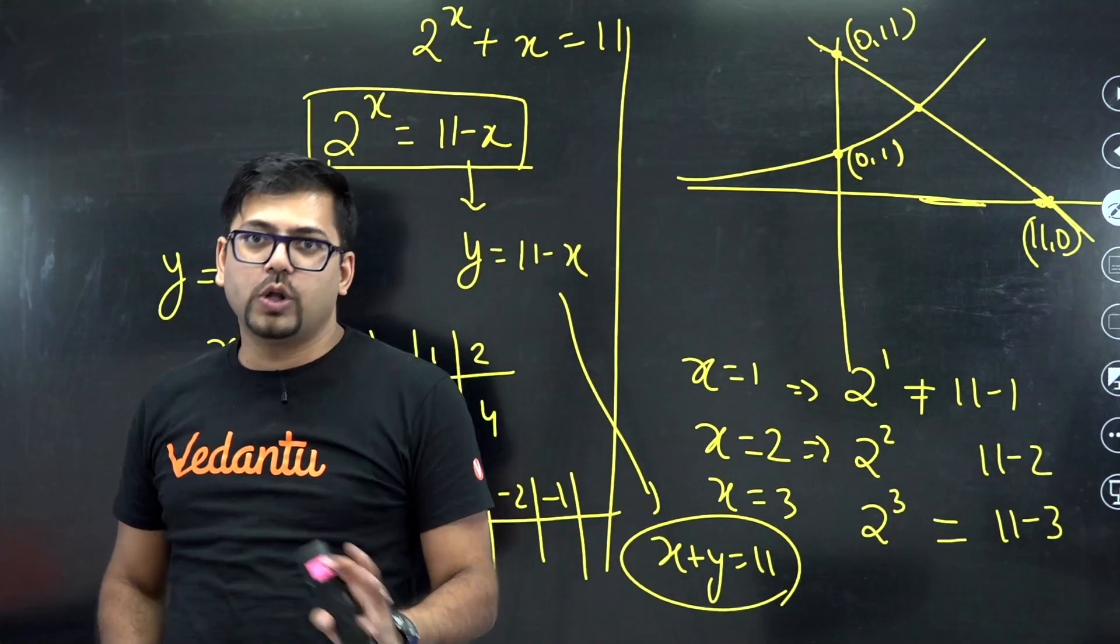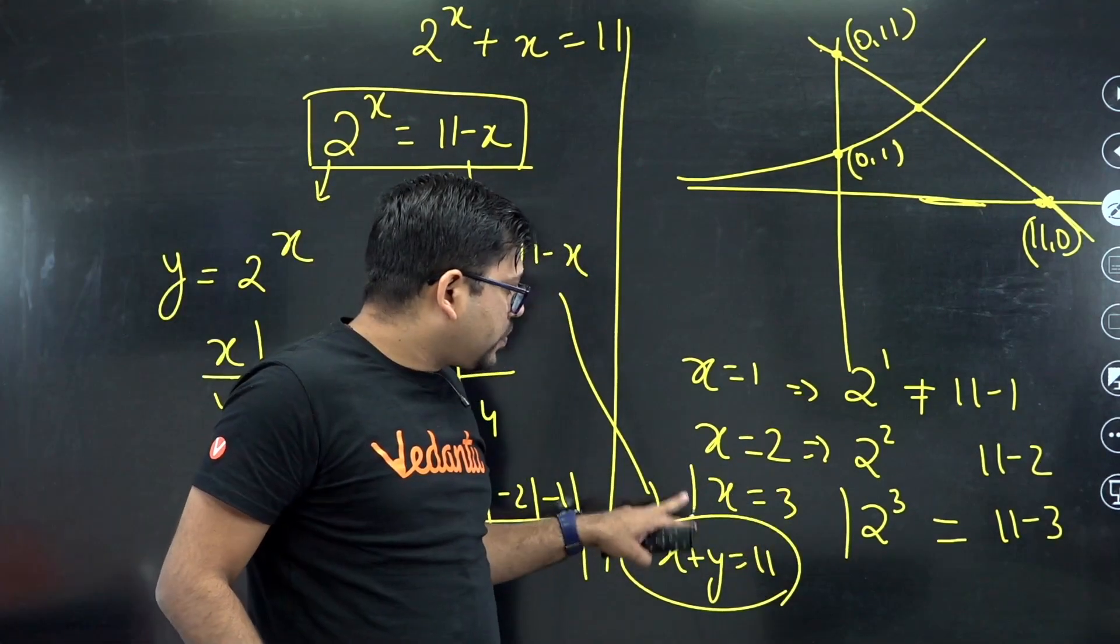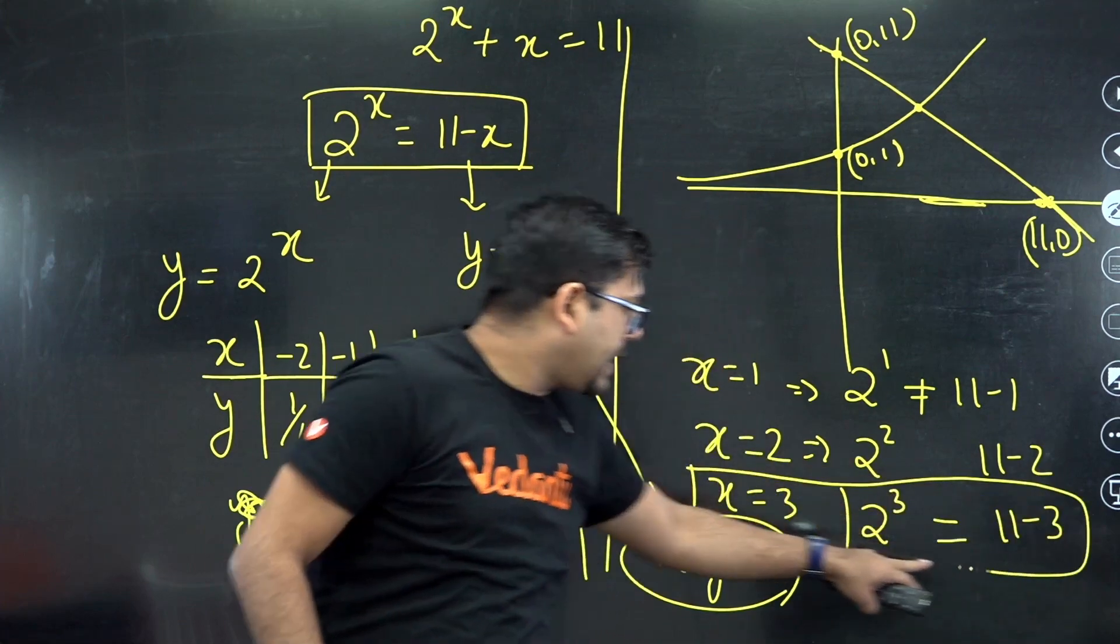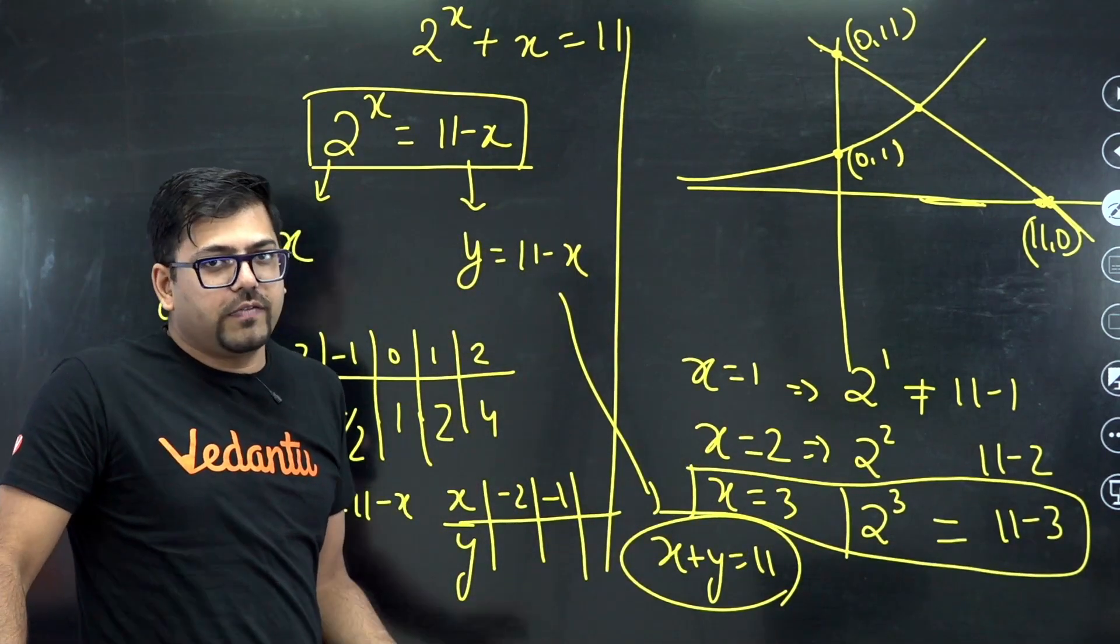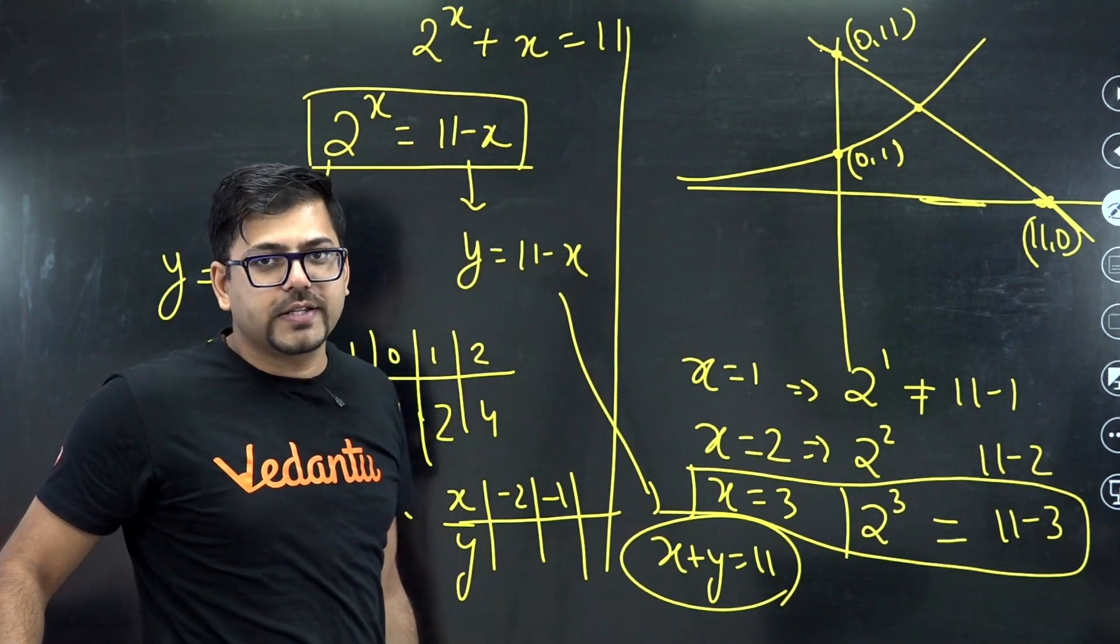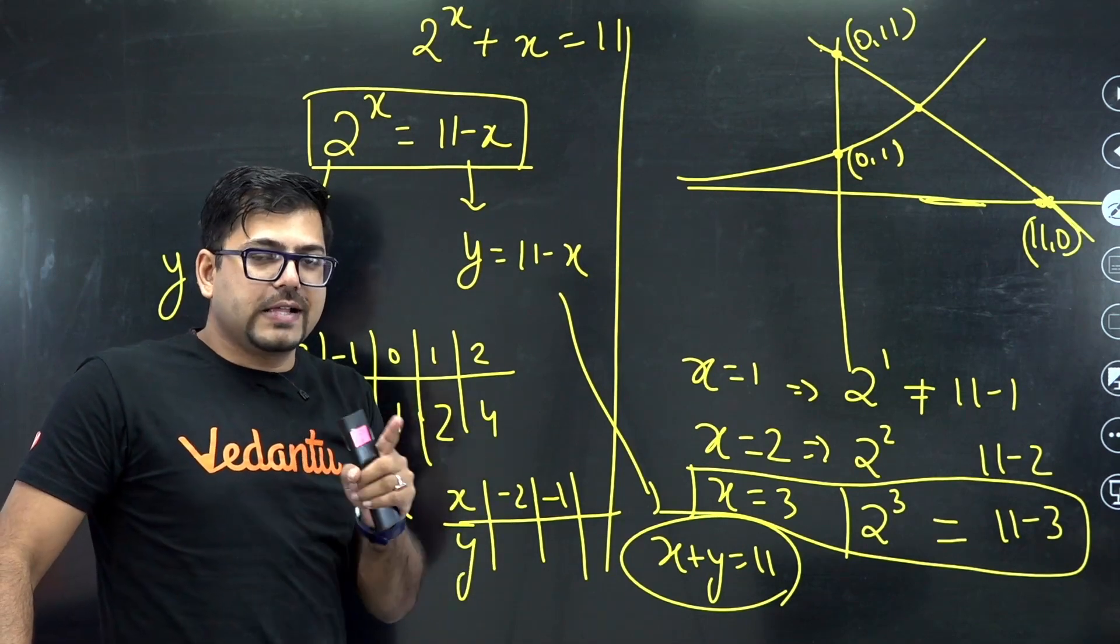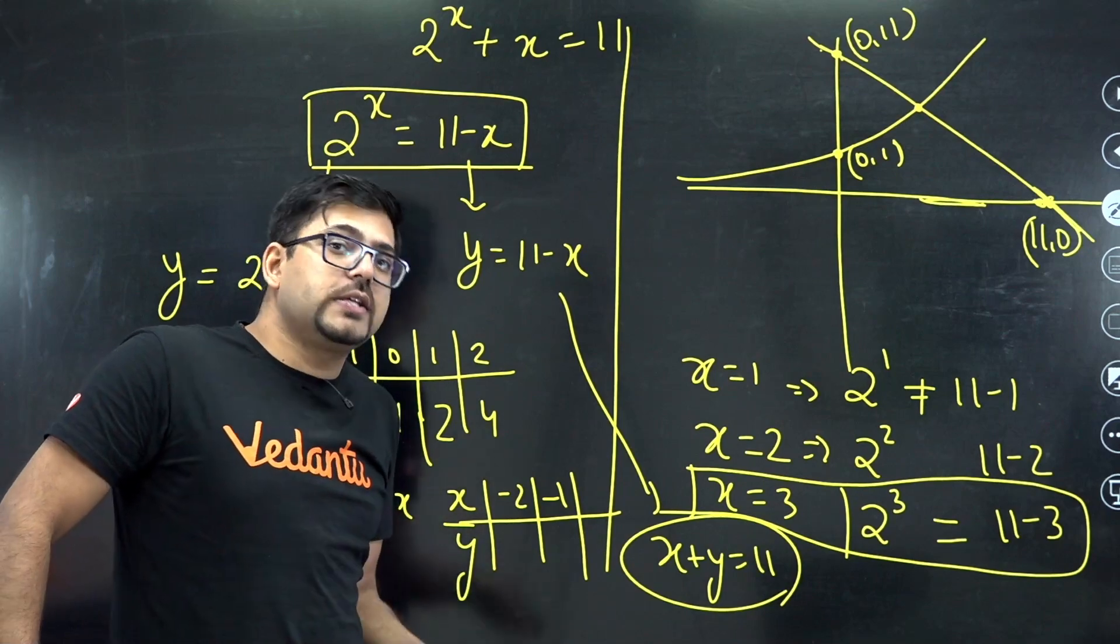So this is the only method, although hit and trial. Now we have got the solution that x equals 3. At this point of time, some of you might be thinking that we would have got this answer even without doing this much. We could have simply put x equals 3 by doing some hit and trial. But if you would have got that answer x equals 3, there would not have been any guarantee whether this is the only solution or not.